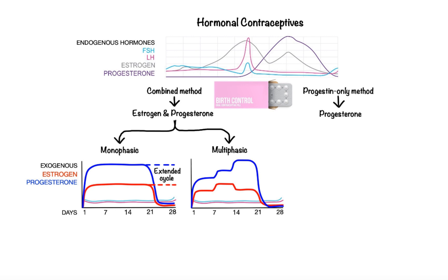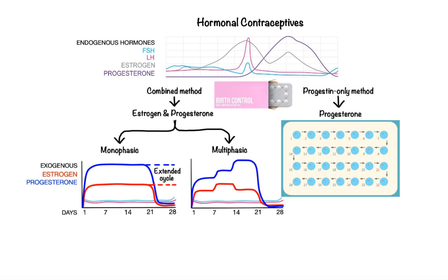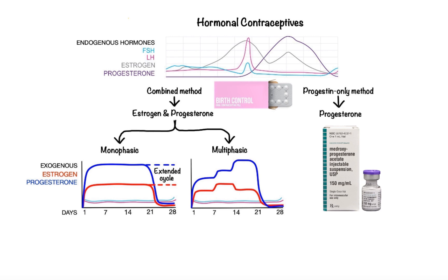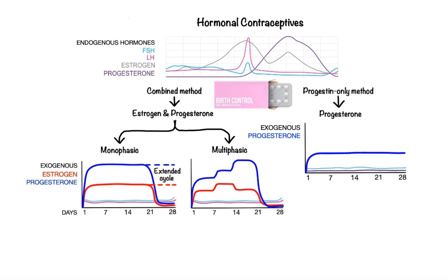Lastly, we have progestin-only birth control pills, which are useful for women who don't want long-term hormonal contraception and for whom exogenous estrogen is contraindicated because of breastfeeding or cardiovascular disease. Progestin-only pills are taken continuously, with no hormone-free intervals between cycles, leading to consistent suppression of FSH and endogenous progesterone production. With the exception of intramuscular depot-medroxyprogesterone, which delivers a high dose of progestin, the systemic dose delivered by all progestin-only products is relatively low. As a result, there is less suppression of endogenous estrogen levels, which allows for occasional LH surges that can trigger ovulation. Instead, progestin-only contraceptives are thought to function primarily by thickening cervical mucus and by causing endometrial atrophy, which inhibits egg implantation and makes it more difficult for sperm to enter the uterus.